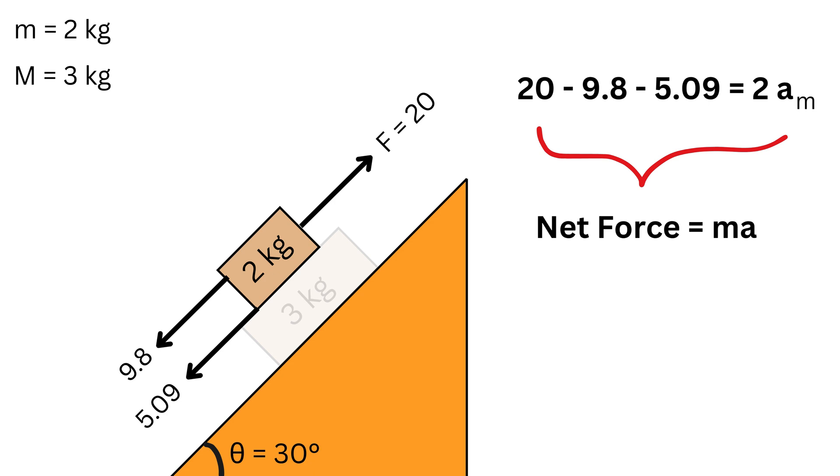So after solving this simple equation, we get a_m as 2.56 m per second squared. This means that this block will accelerate up the incline.